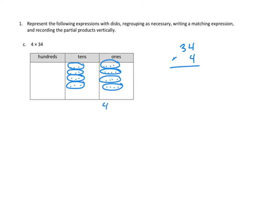We can say that it's 4 times 4 ones. If we count them up we get 16, or we could count by 4s: 4, 8, 12, 16. So our answer is that we're going to get 16 ones, which is exactly what we'd expect. Now if we shift over to our partial products, if we were to multiply 4 times those 4 ones, we would get 16. And we could describe that 16 as 4 times 4 ones — notice how that's exactly what we have written down here.